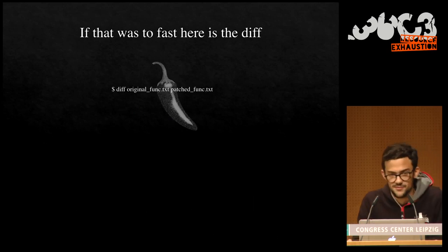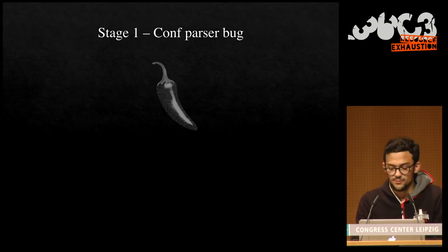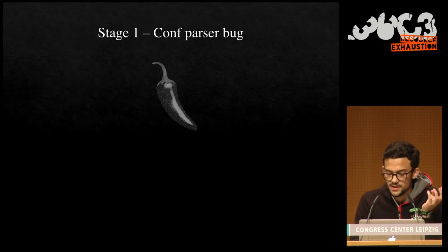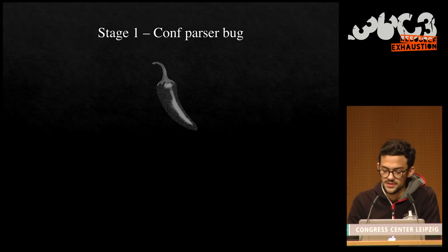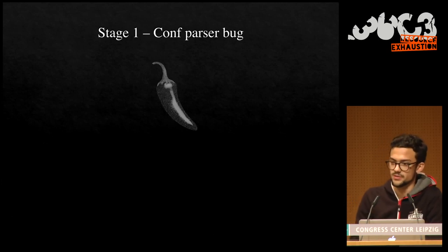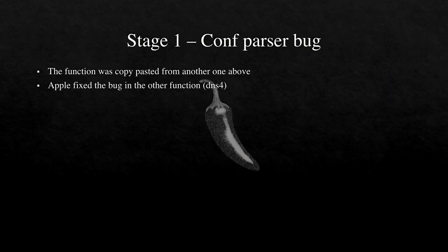Apple became aware and said they fixed it — it got CVE-2012-3727. They claimed the issue was addressed through 'improved bounds checking.' But looking at the diff — there is no difference. The bug is still there. What really happened is that there are two similar statements in the config parser for parsing IP addresses (dns4 and wins4), and the fix function was copy-pasted. Apple fixed the bug in the other function but not the wins4 one and apparently never tested it against pod2g's original PoC, because raccoon would have crashed again. It's basically an off-by-one which allows you to overwrite the index of an array.